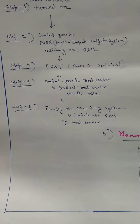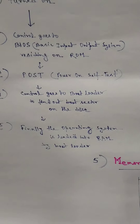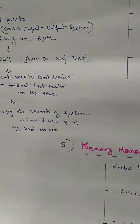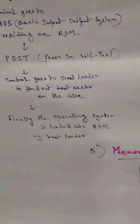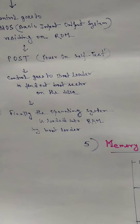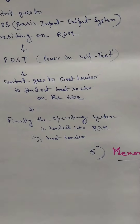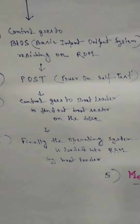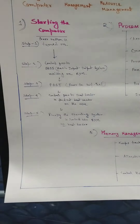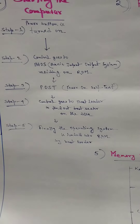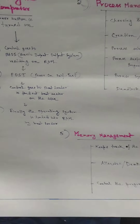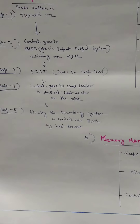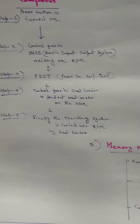After BIOS, the control goes to the bootloader. The bootloader is also a program, and it tries to find the boot sector in the hard disk. When it finds the boot sector, it loads the operating system into RAM. Once the operating system is loaded into RAM, everything is controlled by the operating system. The operating system then takes command of every application software of the computer.